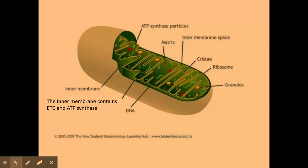And the last one, the inner membrane, which we know is folded into the cristae. But the inner membrane is important because it contains ATP synthase and it also contains the electron transport chain and the components that make up that.